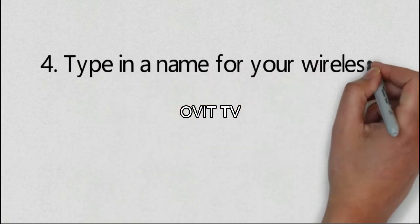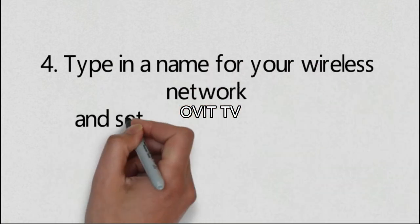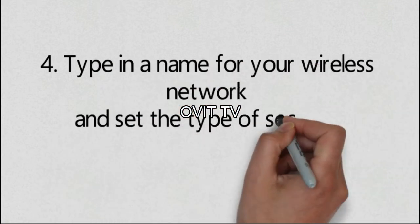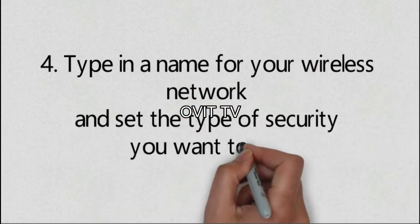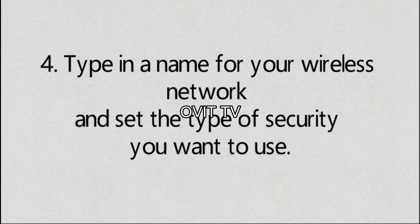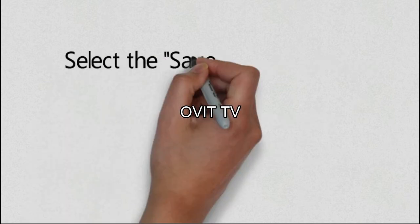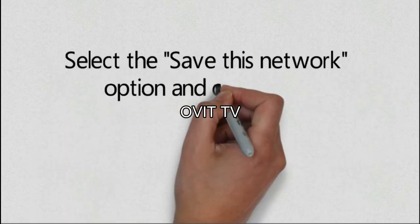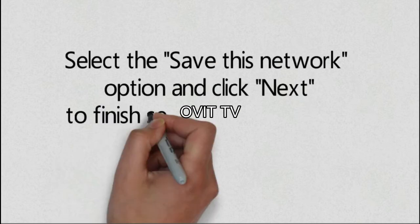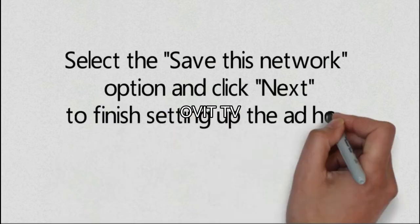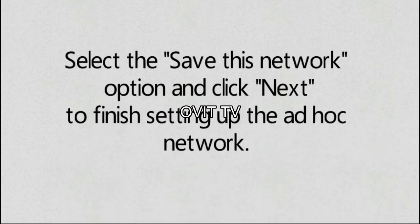Step 4: Type in a name for your wireless network and set the type of security you want to use. Select the Save this Network option and click Next to finish setting up the ad-hoc network.